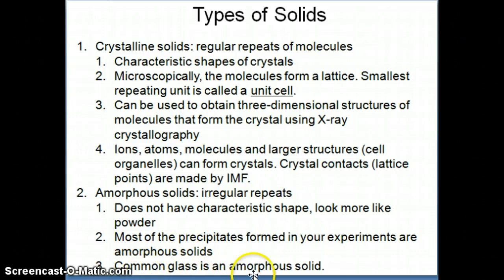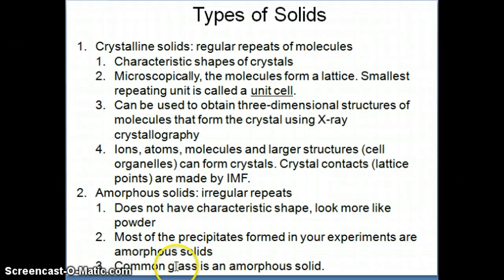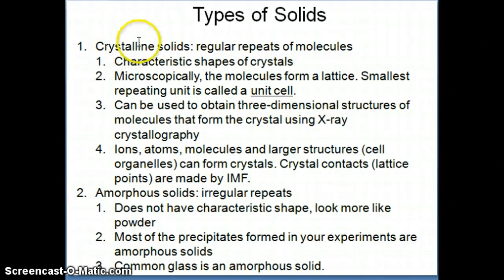An example of an amorphous solid that you might not know about is common glass. If you look at glass, it's actually a solid that cooled down very quickly, so it hasn't had time to rearrange itself into a regular pattern. That's what glass is — it's not crystalline, it's actually amorphous. It doesn't have a particular shape to it. However, we distinguish this type of solid from what we call crystalline solids.